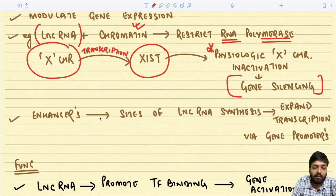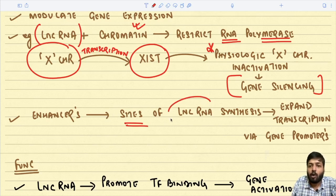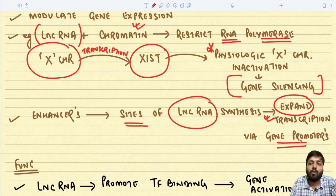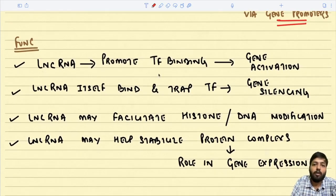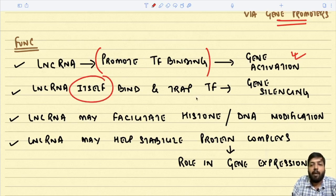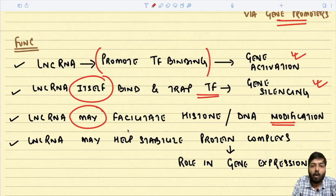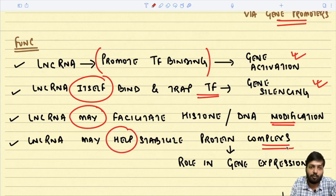Sometimes enhancers can serve as a site for synthesis of long non-coding RNAs, which when expressed can stimulate the process of transcription via stimulation of gene promoters. So long non-coding RNAs can either silence a particular gene or promote transcription. Their functions include: promoting transcription factor binding to activate the gene, or binding and trapping a transcription factor to prevent it from binding a gene — leading to gene silencing. They may also facilitate histone or DNA modification and help stabilize certain protein complexes. With this, we have completed Part One of Chapter One.